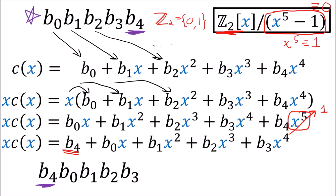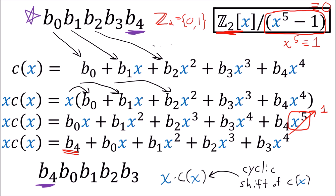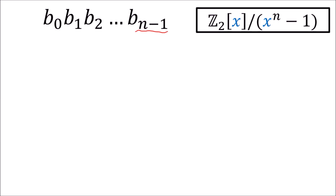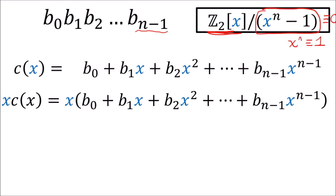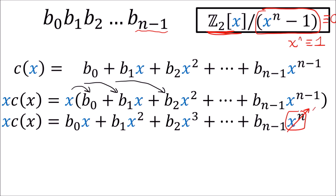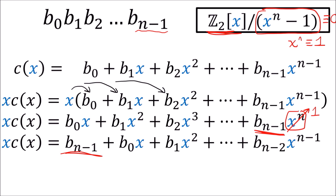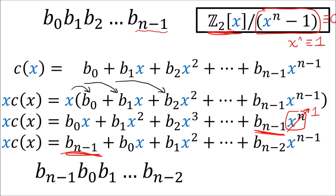A cyclic shift of codeword digits is equivalent to multiplying the codeword's polynomial by x. The same logic applies to any codeword with n digits: we work in polynomials in x with binary coefficients mod x^n minus 1, so x^n is equivalent to 1. Multiplying by x increases all powers, and x^n wraps to 1, bringing the last coefficient to the front — giving us the cyclic shift.